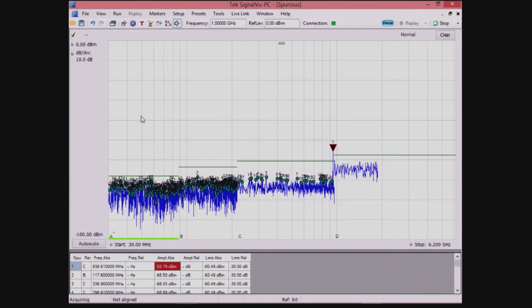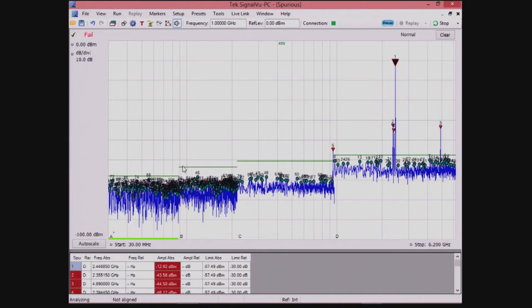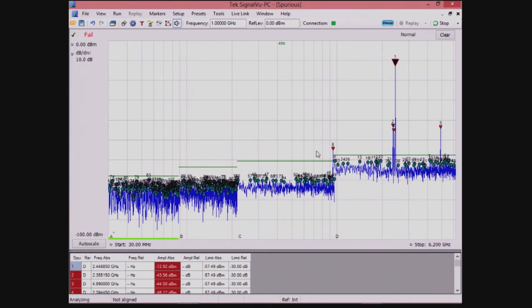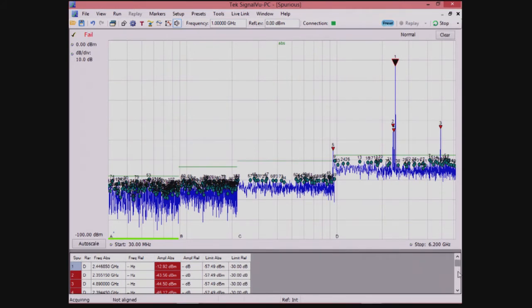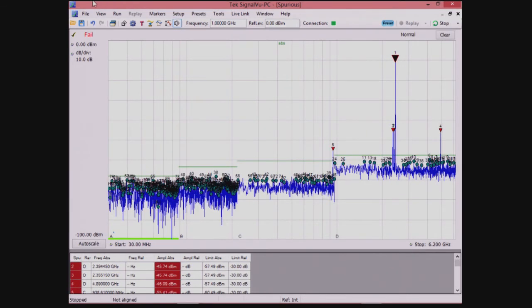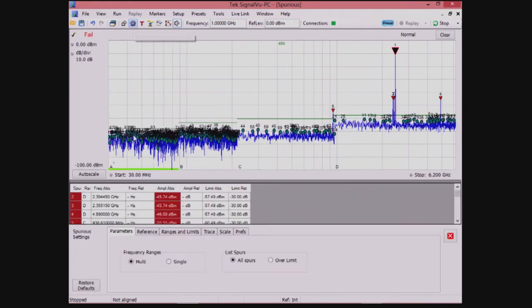This shows a complete setup of our spur search measurement. You can see the limit lines displays, and you can also see the violations of these limit lines. Once this is set up, this gives you a pass-fail test against those limit lines. If you wanted to make changes to the limit lines or the measurement, you can expand the table and make changes.